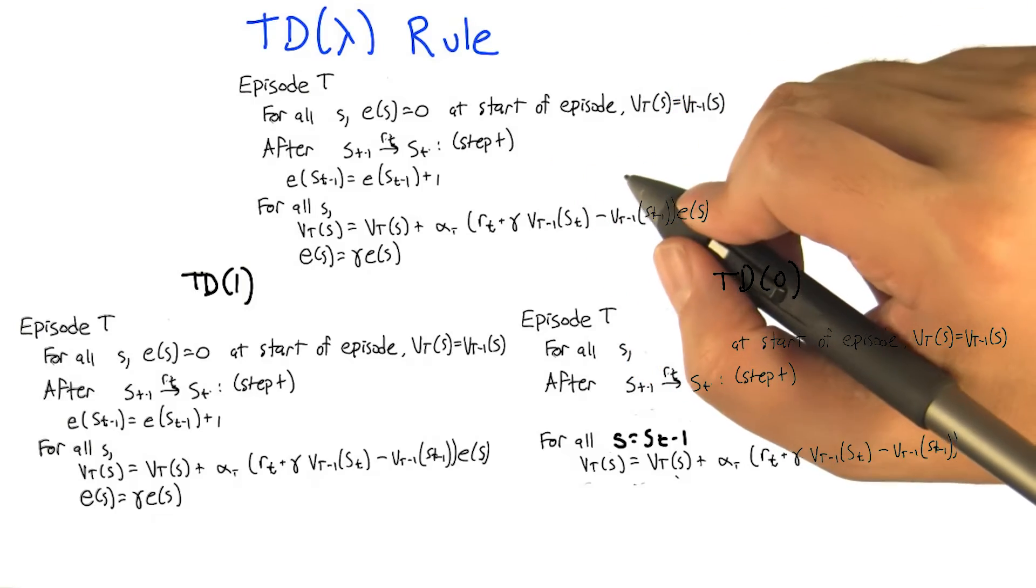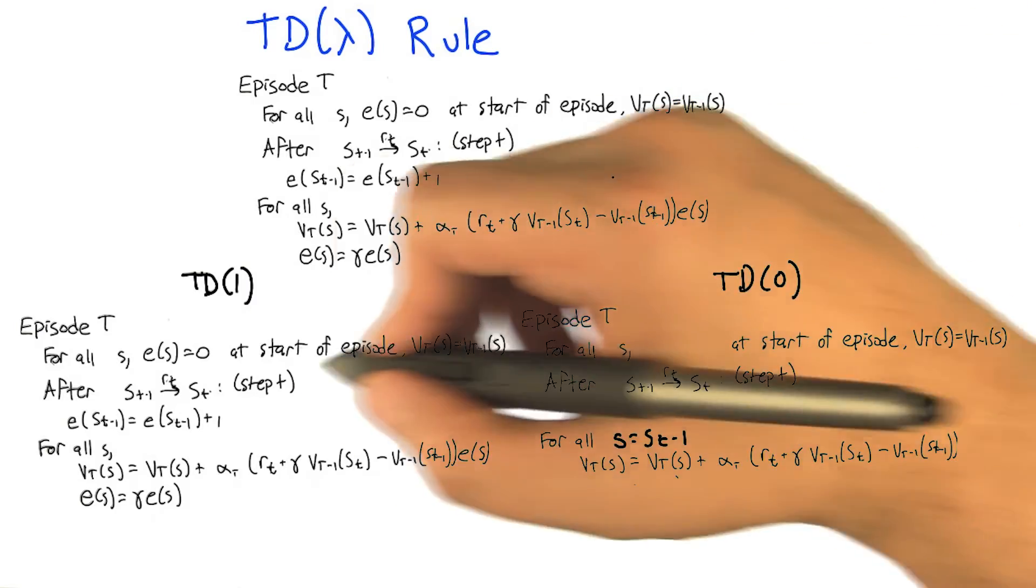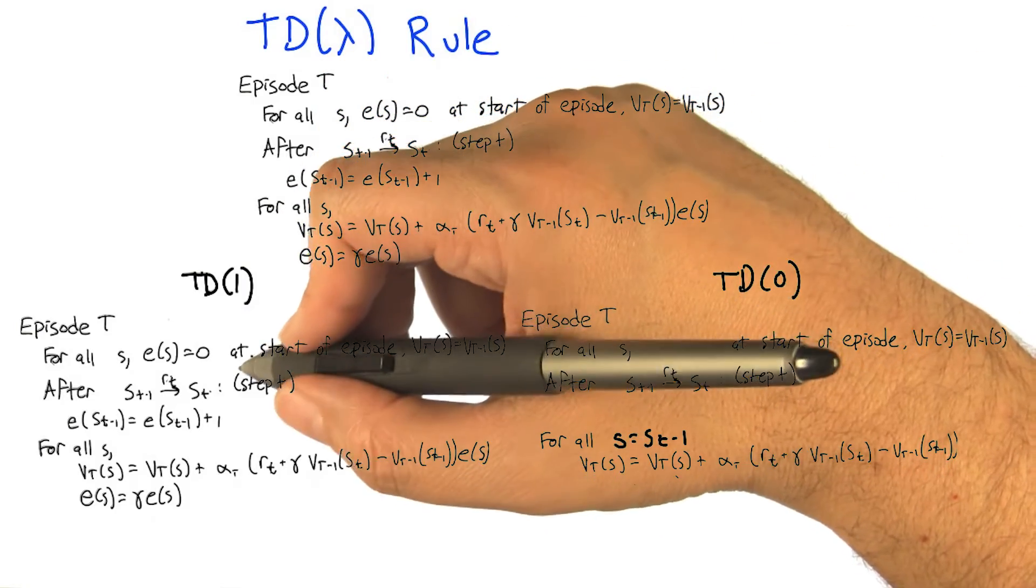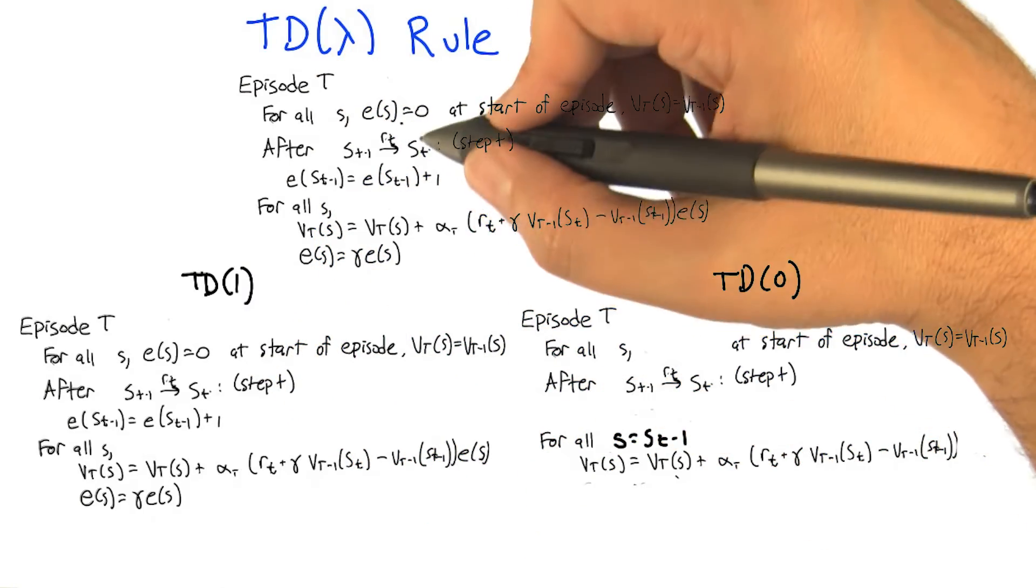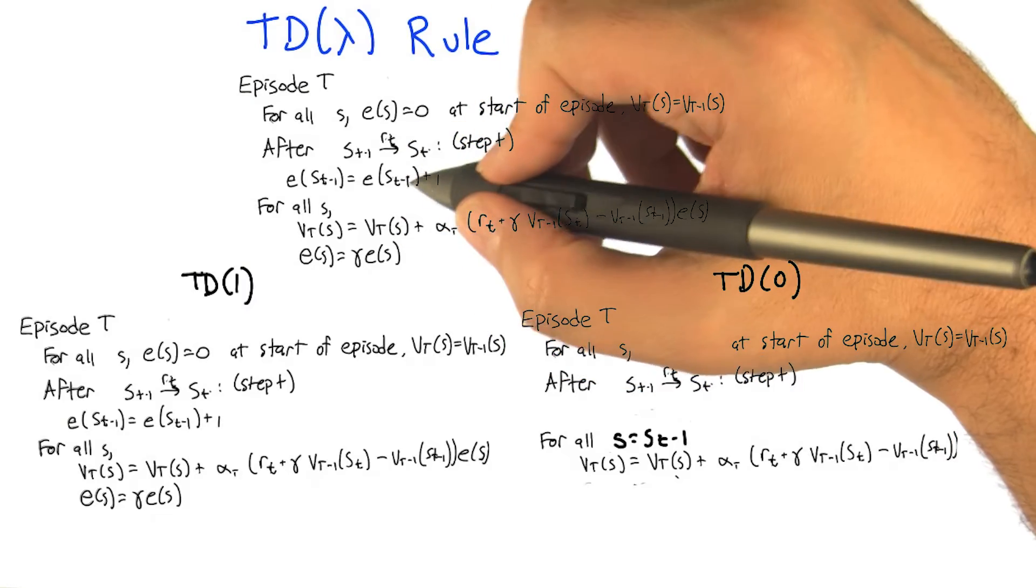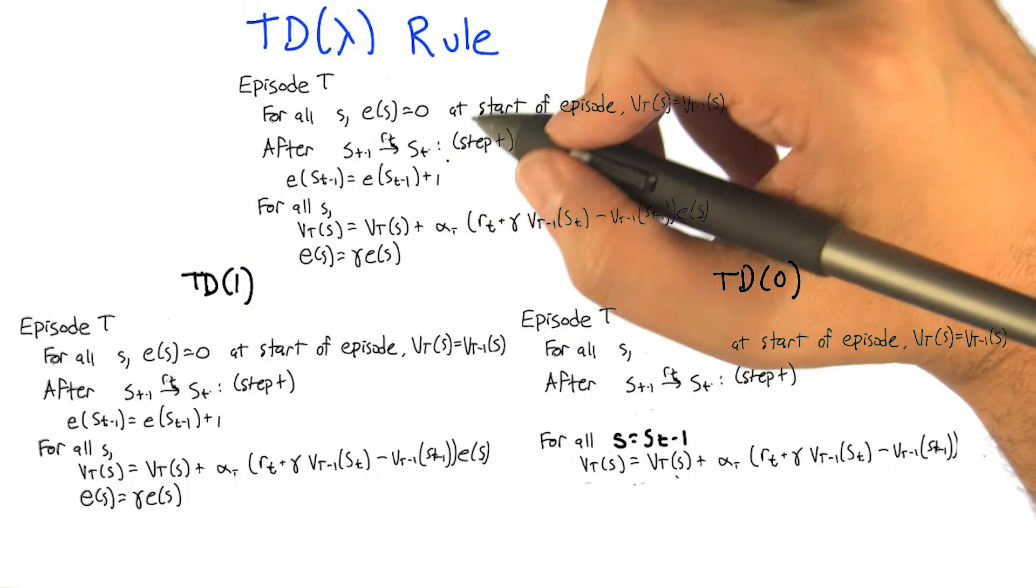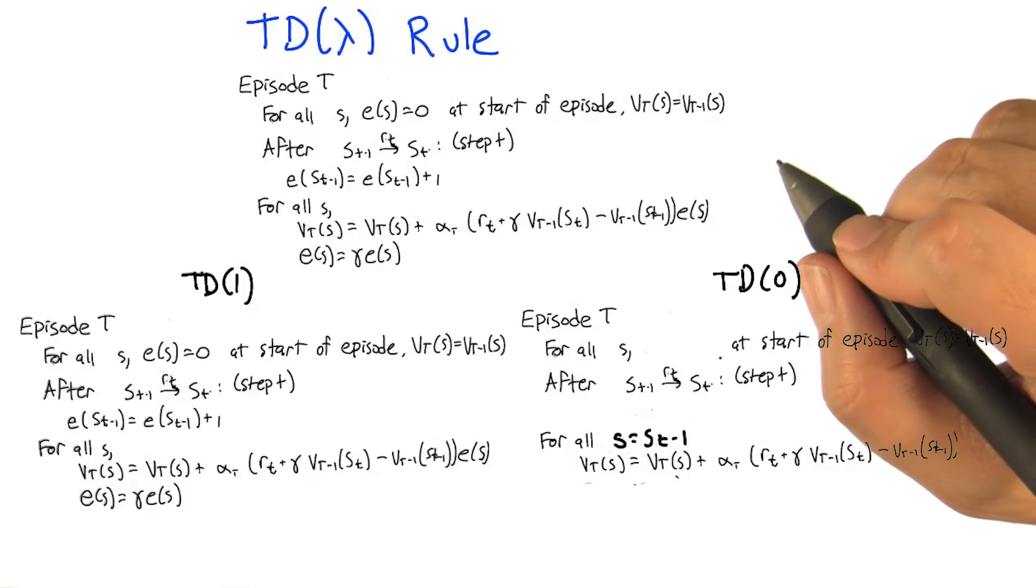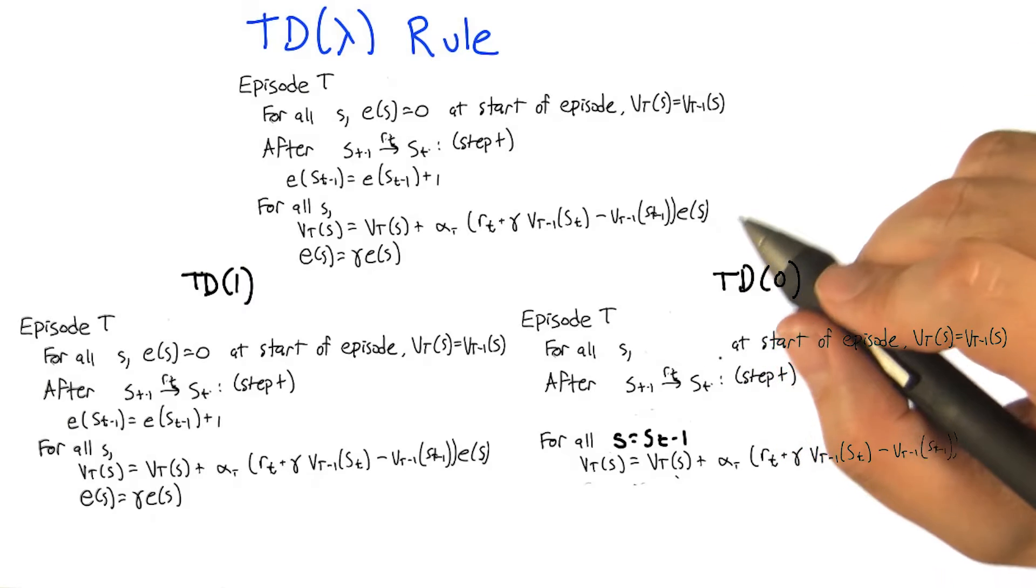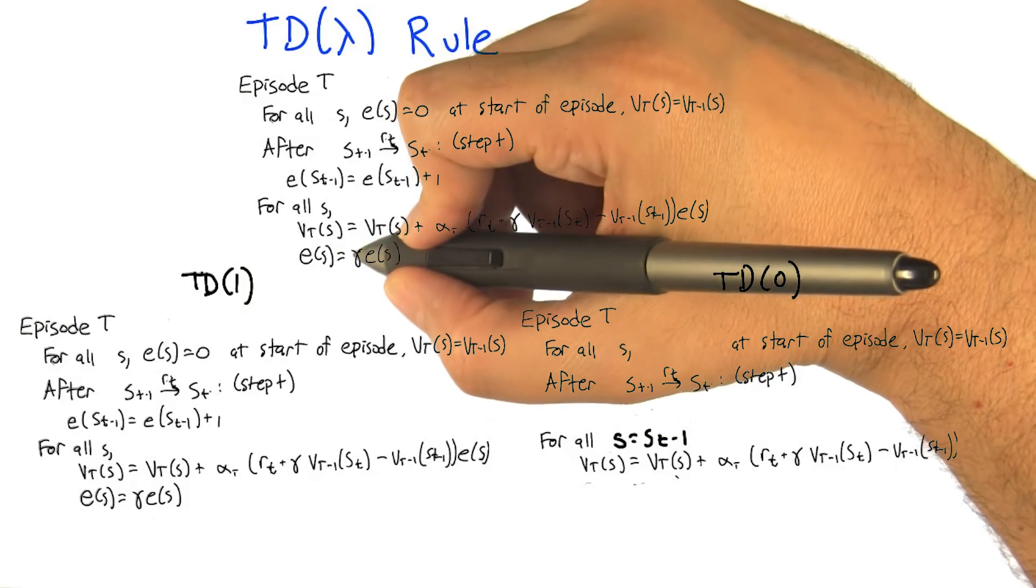All right, so now we're ready to describe the TD(λ) rule. What I've done now is I took, I got rid of those words, and I took the TD(1) rule and copied it up here. So this is currently TD(1). And what we now need to do to it is make changes to it, small as we can, so that it turns it into TD(0) when lambda is equal to 0. So we need to introduce a lambda. So here's what I'm going to do, just to kind of cut to the chase.